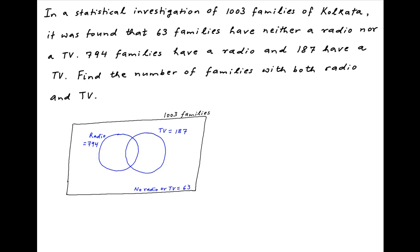If we assume that X families own both a radio and a TV, then number of families with a radio only is equal to 794 minus X, and number of families with a TV only is equal to 187 minus X.